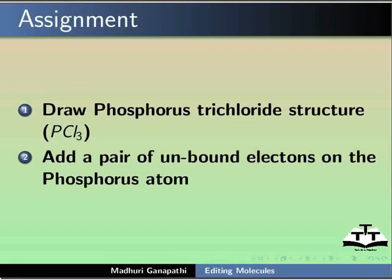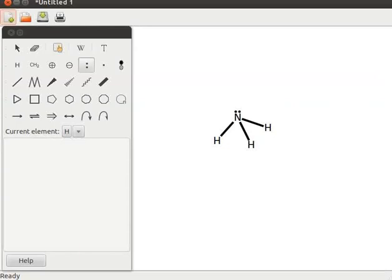As an assignment, draw the phosphorus trichloride structure and add a pair of unbound electrons on the phosphorus atom. Now let us draw carbonic acid and sulfuric acid structures.